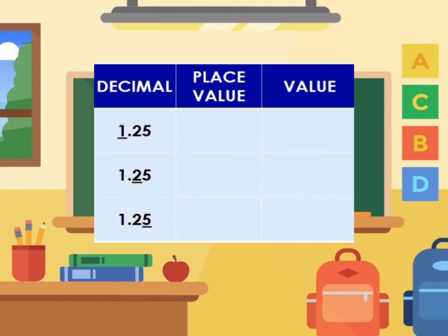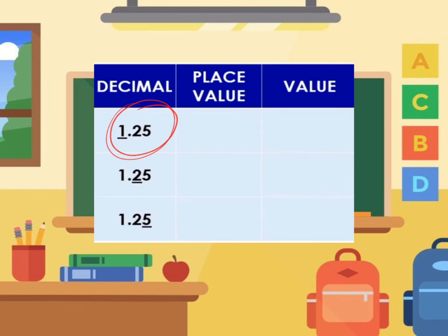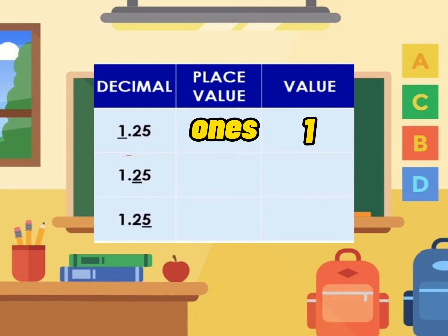Let's find the place value and value of each underlined digit. We have the given number 1.25. Let's place it on our place value chart. For the first digit, what do you think is the place value of the underlined digit? Very good — ones! How about the value? Very good — one!